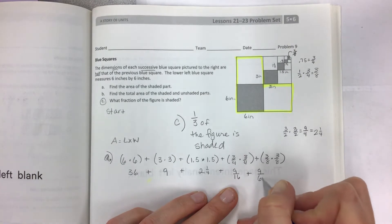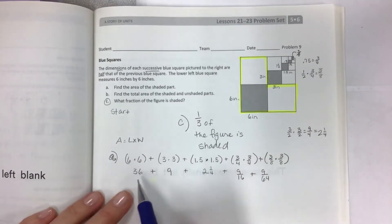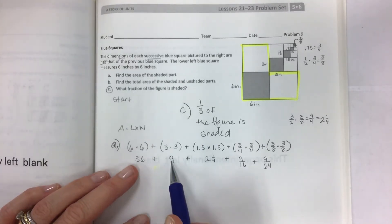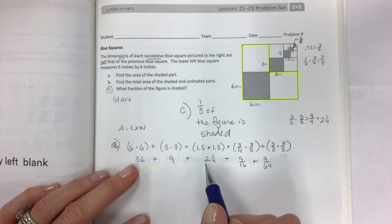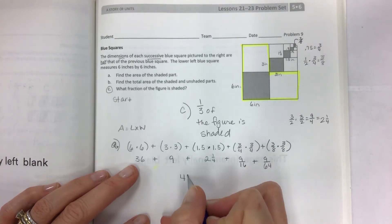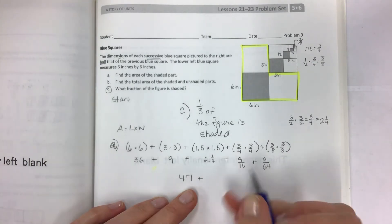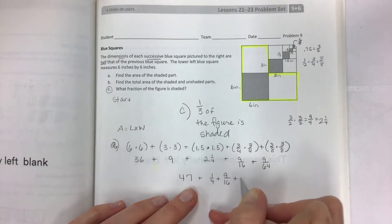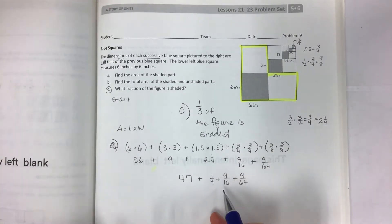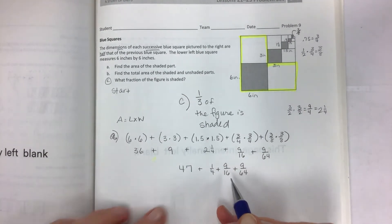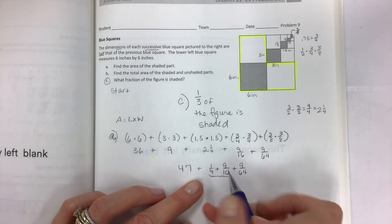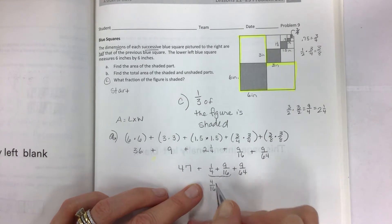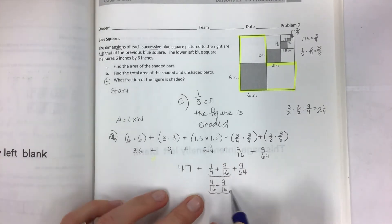Now if I have 1.5 times 1.5, let's take that and go 3 halves times 3 halves equals 9 fourths, and 9 fourths would be 2 and 1 fourth. And then this 3 fourths times 3 fourths we can just put 9 sixteenths. And then 3 eighths times 3 eighths, there's no cross canceling, and so it's going to be 9 sixty-fourths. Now we have some combining to do, so let's put our whole numbers together. 36 plus 9 is not 46, it's 45. And then put all your fractions together with our different denominators.